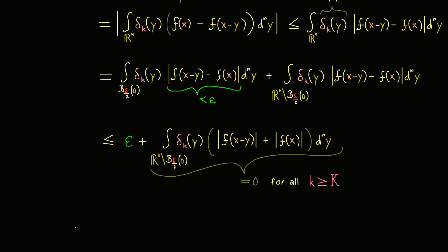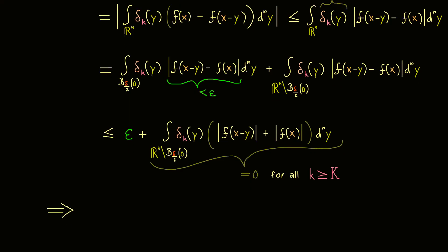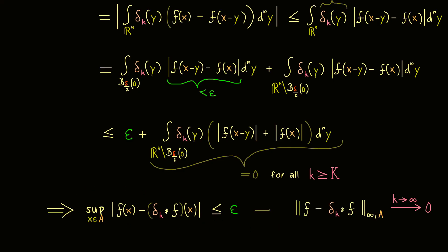We have shown that the supremum norm of f minus the convolution goes to zero, confirming convergence on compact domains. This means any continuous function f can be uniformly approximated by a C-infinity function — and exactly this is the approximation theorem shown today. I hope we meet again in another video about mathematics, and I wish you a nice day.